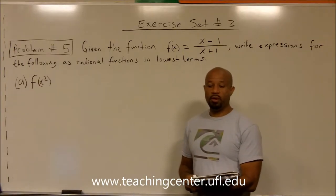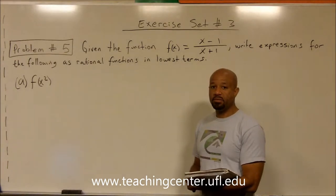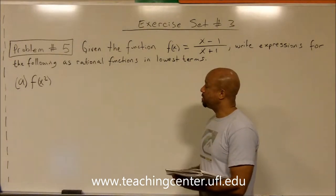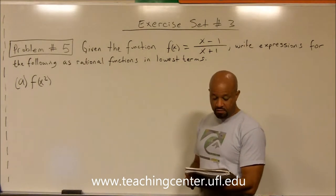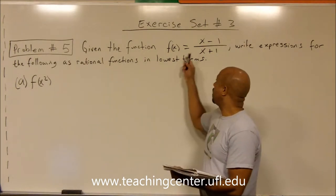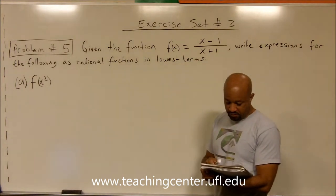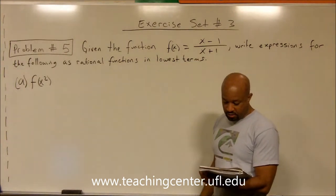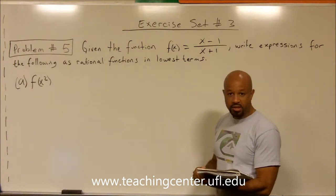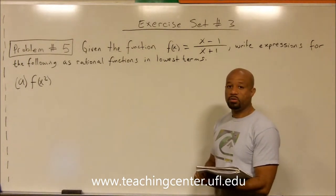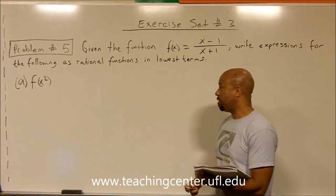I'm going to solve problem number 5 in exercise set number 3. In this particular problem, given the function f of x equals x minus 1 divided by x plus 1, write expressions for the following as rational functions in lowest terms. We have 4 different parts: a, b, c, and d, and we're going to work through each part beginning with part a.